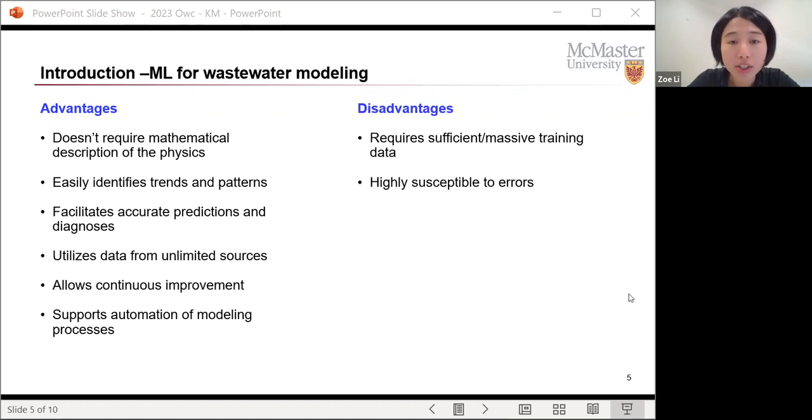But the disadvantages are also quite obvious. Oftentimes to develop a machine learning model, we will need a large amount of training data. And if there are errors in the data, then the machine learning model you build is unlikely to be very accurate or reliable.